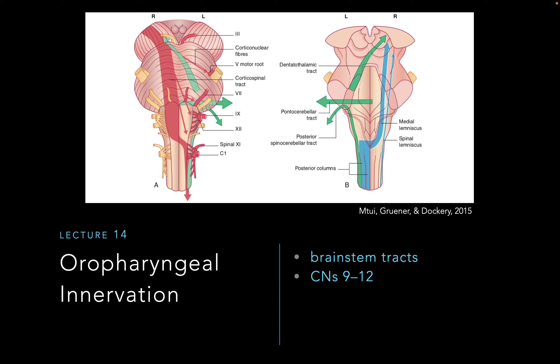In this lecture, we start our discussion of cranial nerves. We'll start at the bottom and work our way up. First, we'll review the brainstem tracts, which are shown in the cartoon here, containing both descending and ascending tracts. Then we'll step through cranial nerves 9 through 10.